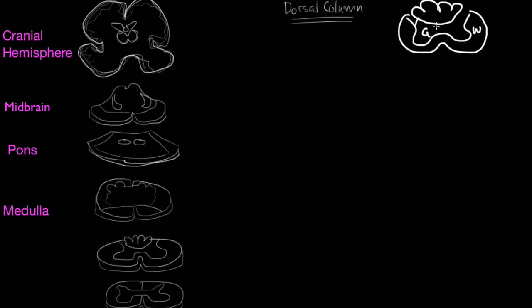and this is the white matter, and the dorsal column is this. So it's a column of the spinal cord that's on the back, dorsal column.